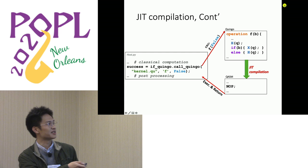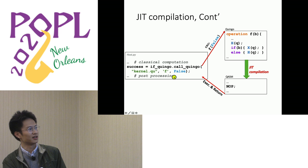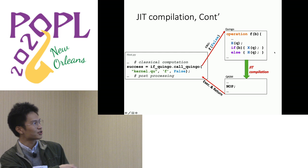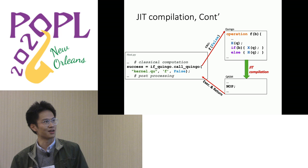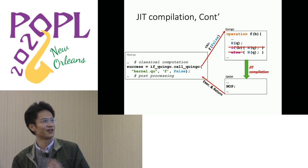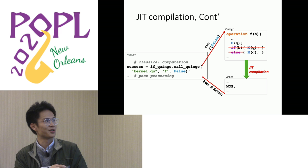Here is an example illustrating the power of JIT compilation. On the left-hand side is a Python host program that calls the Quingo procedure f with the argument 'false.' After calling this procedure, JIT compilation inlines the 'false' argument and is able to optimize out the if-branch. Furthermore, since the Hadamard gates are consecutive, the JIT compiler can cancel these operations, resulting in a no-op kernel code.